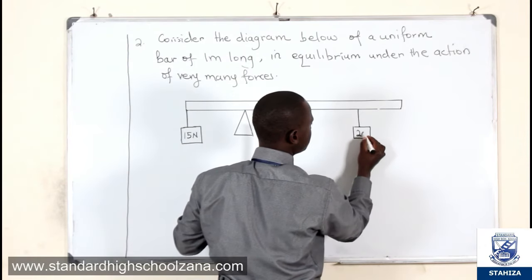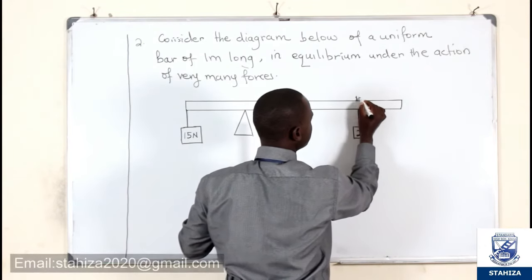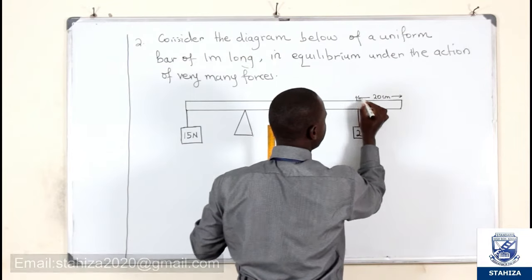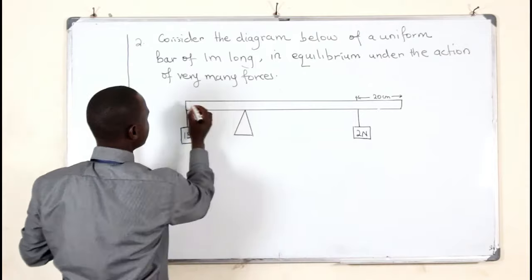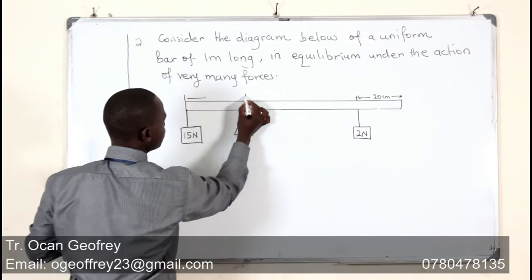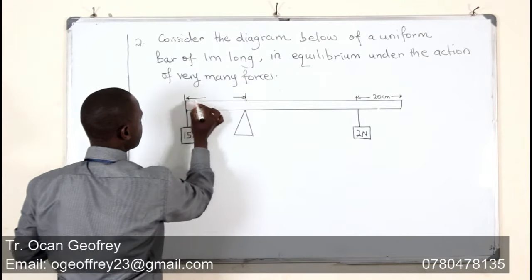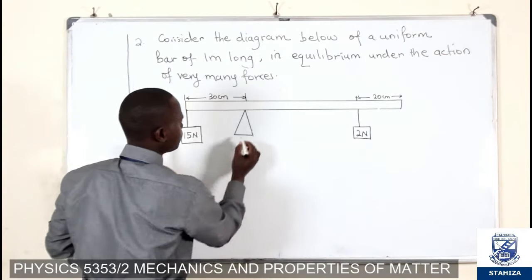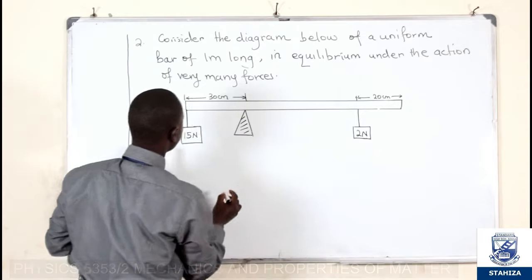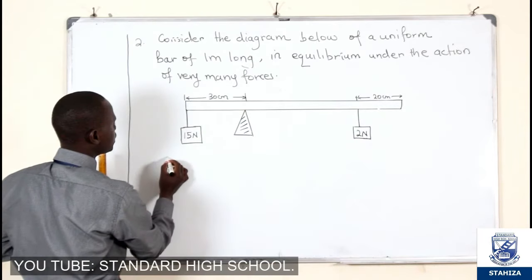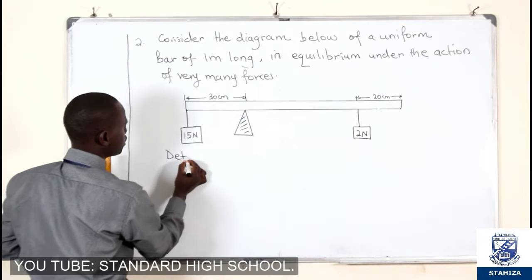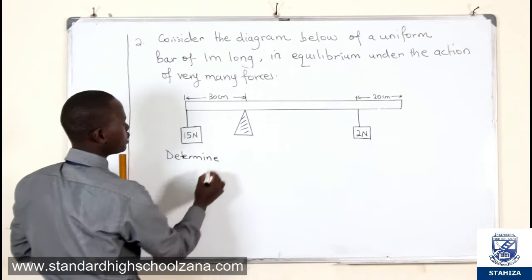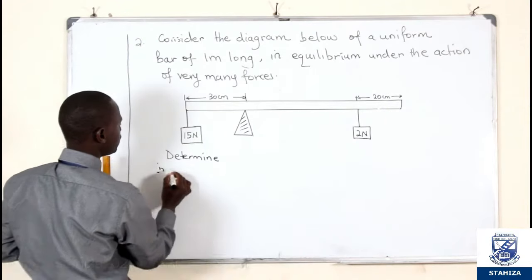In the diagram we have a 2 Newton force, and some distance — this is 20 centimetres. From there up to another point is 30 centimetres. Our questions are: determine number one, the total clockwise moment; number two, the total anti-clockwise moments; and also get the weight of the bar.